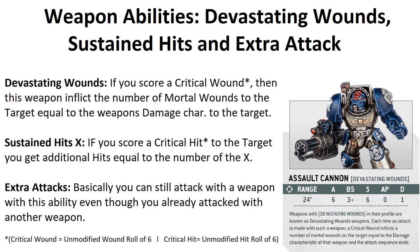Extra Attacks: if a weapon has this rule, the bearer can attack with this weapon even while using another weapon. For example, I have a power sword with 5 attacks, but I also have a chainsword with 3 attacks and the Extra Attacks ability — I can make all 3 chainsword attacks even though I already fought with my power sword. Extra Attacks are really good.